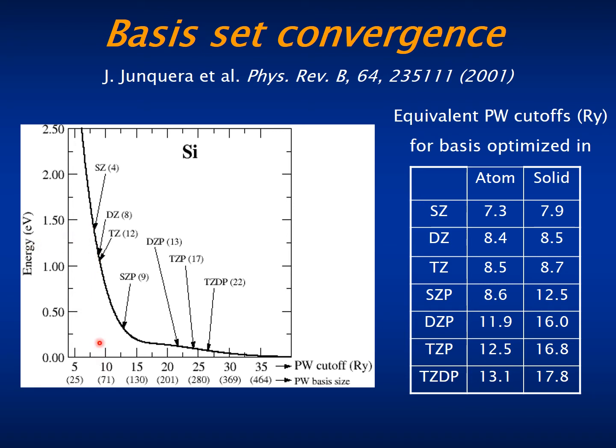And a standard double zeta plus polarization basis set of SIESTA is equivalent in terms of energy convergence to a plane wave basis of more than 200 orbitals.